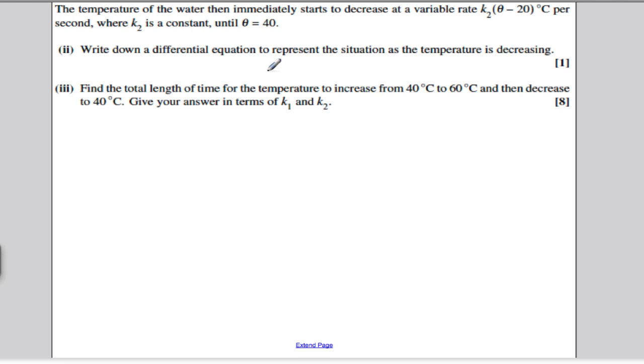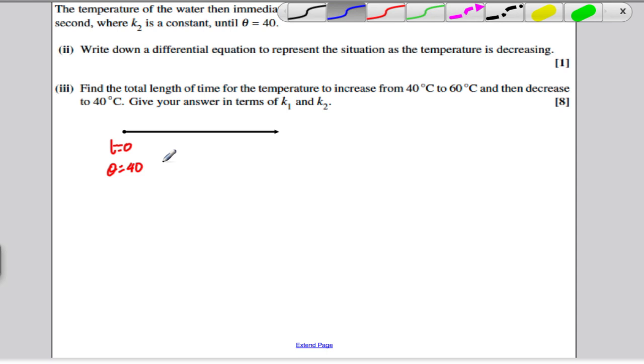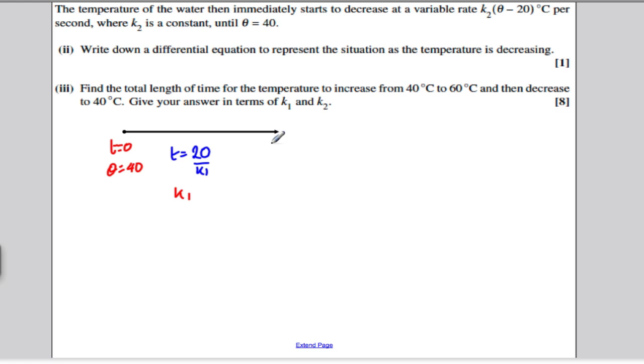Then it tells us that having reached theta being 60, now the water starts to decrease in temperature. So let's write what happened when T was 0, theta was equal to 40. And then we had an increase over time, which we said time turned out to be 20 over K1, and the rate over this time was K1, until this time later was 20 over K1. We had theta being 60. But now from this point, the rate starts decreasing, so the temperature starts decreasing, until it is back to 40.